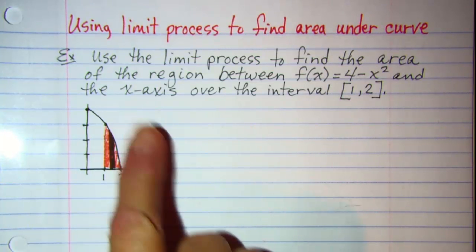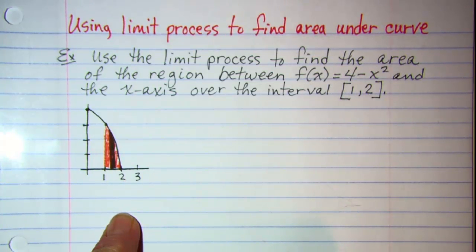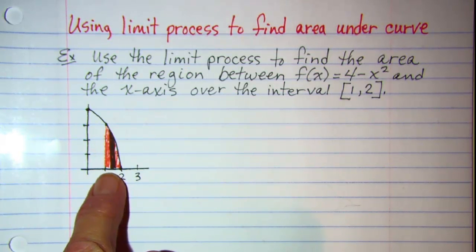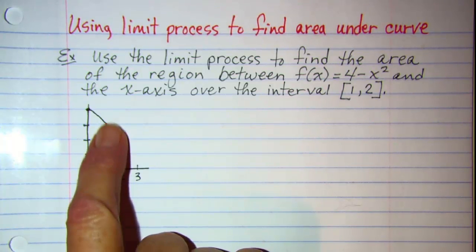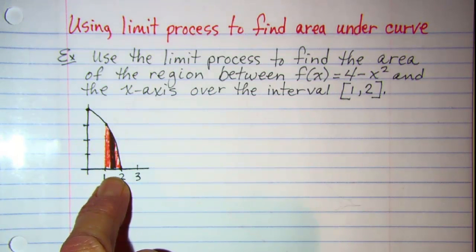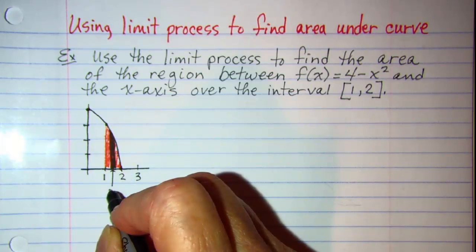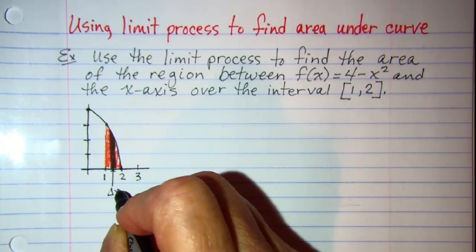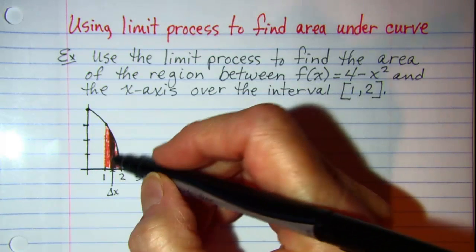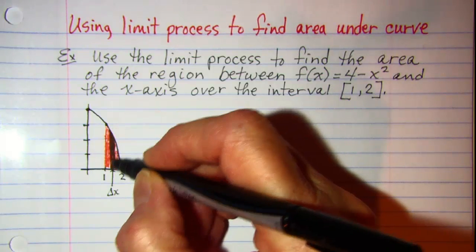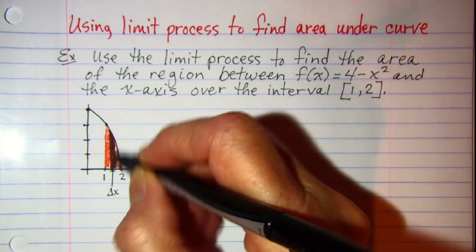I drew a sketch of the graph where the red portion represents the area that we're looking at, and the black here represents just a representative rectangle. The width of the rectangle is delta x, and the height will be found by taking f of some x value in that rectangle.